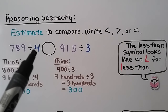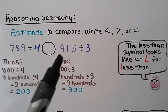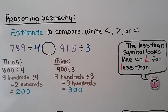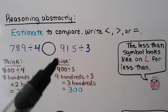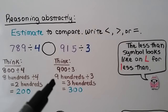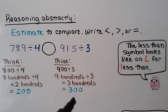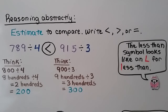We have 789 divided by 4, and we need to write less than, greater than, or equal to, comparing it to 915 divided by 3. For 789 divided by 4, that's very close to 800, so we think 800 divided by 4 equals 200. For 915 divided by 3, it's close to 900, which is compatible with 3, so 900 divided by 3 equals 300. Since 300 is greater, 789 divided by 4 is less than 915 divided by 3.